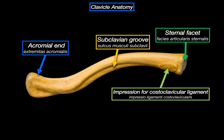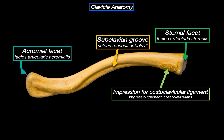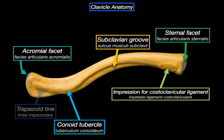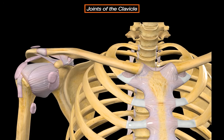Then as we move on to the lateral third, we can see the acromial facet, which is where the clavicle meets the acromium of the scapula. We can see the conoid tubercle and the trapezoid line. These are the attachment points for the conoid and trapezoid ligaments, which are essentially parts of the costoclavicular ligaments. So that's the general layout of the clavicle — very simple.